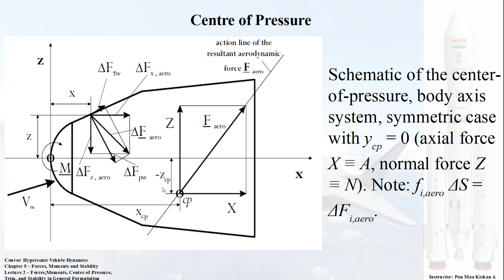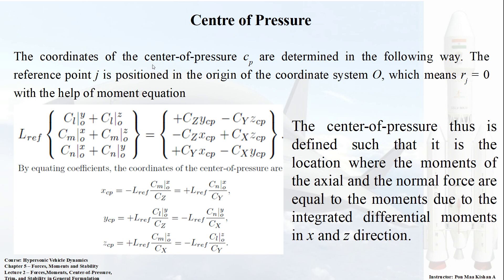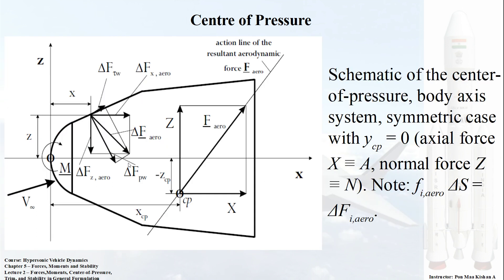Here we have a blunt body cross-section where the center of pressure is located at a distance Z_cp from the reference line X. This is a symmetrical case — the central line is drawn and Y_cp equals zero, meaning the center of pressure is located in the X-Z plane only. If Y_cp had a non-zero value, the problem would extend into three dimensions, but here we can solve it as a 2D problem.